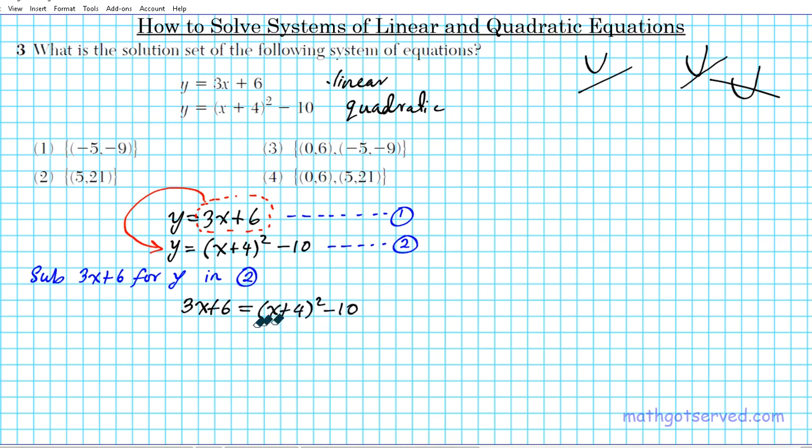Let's expand the right side first, get rid of that parenthesis. So we have 3x plus 6 equals x plus 4 times itself. You can use the shortcuts we talked about in question two to do this, but let's just do the long way. We have 3x plus 6 equals first x square, outer 4x, inner 4x, last 16, minus 10.